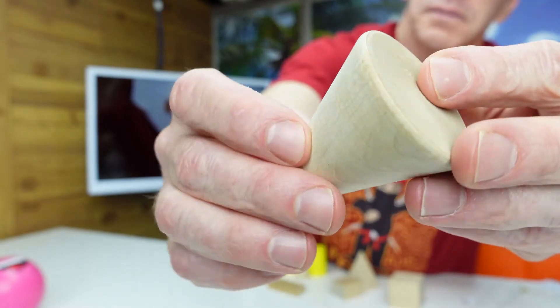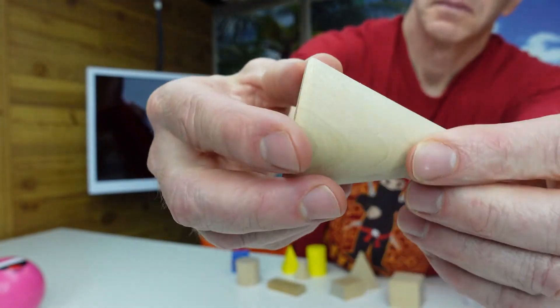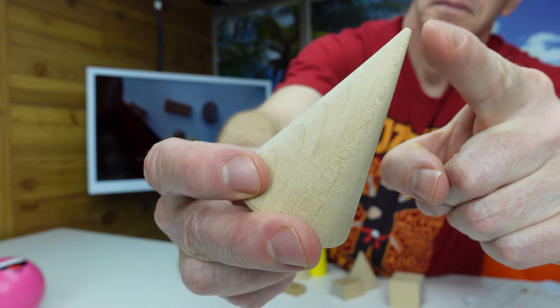This is a cone. It has one face, zero edges, one vertice.